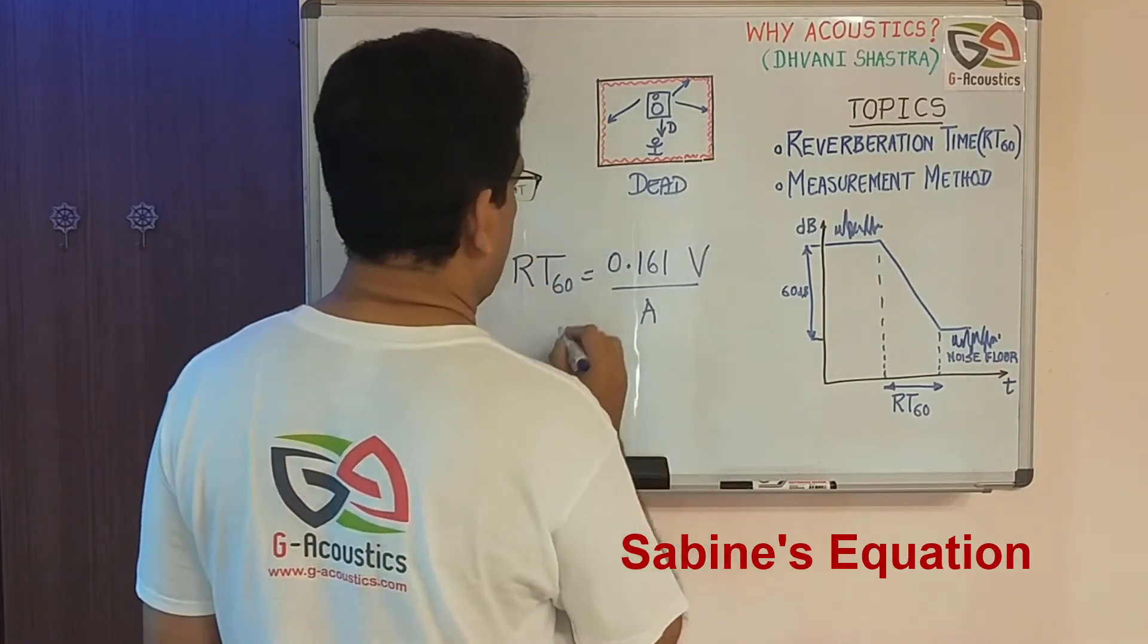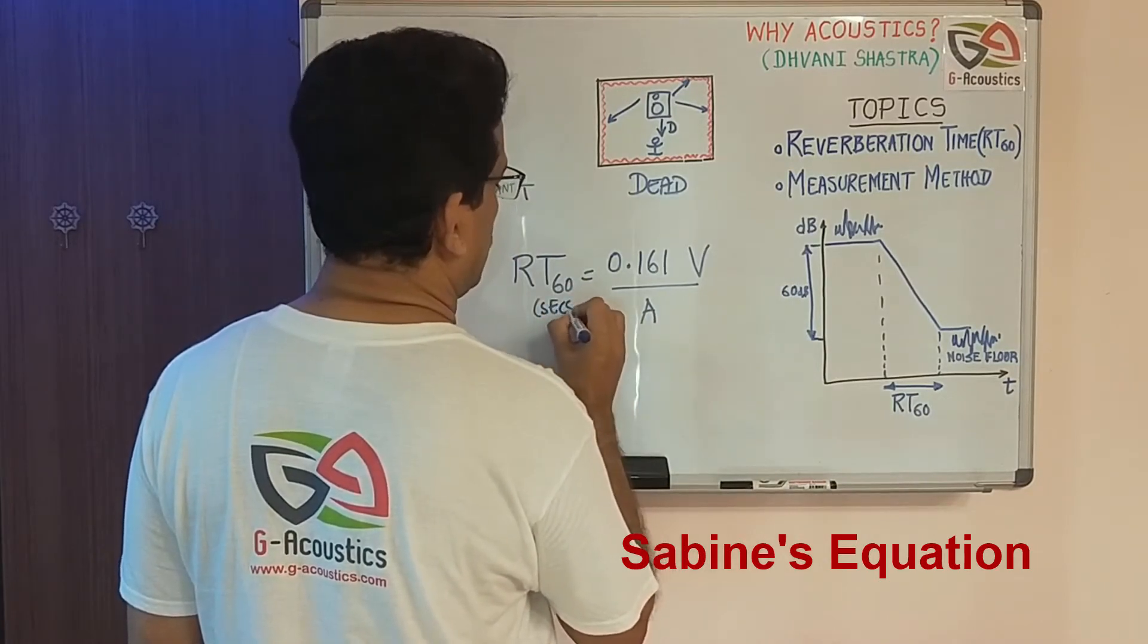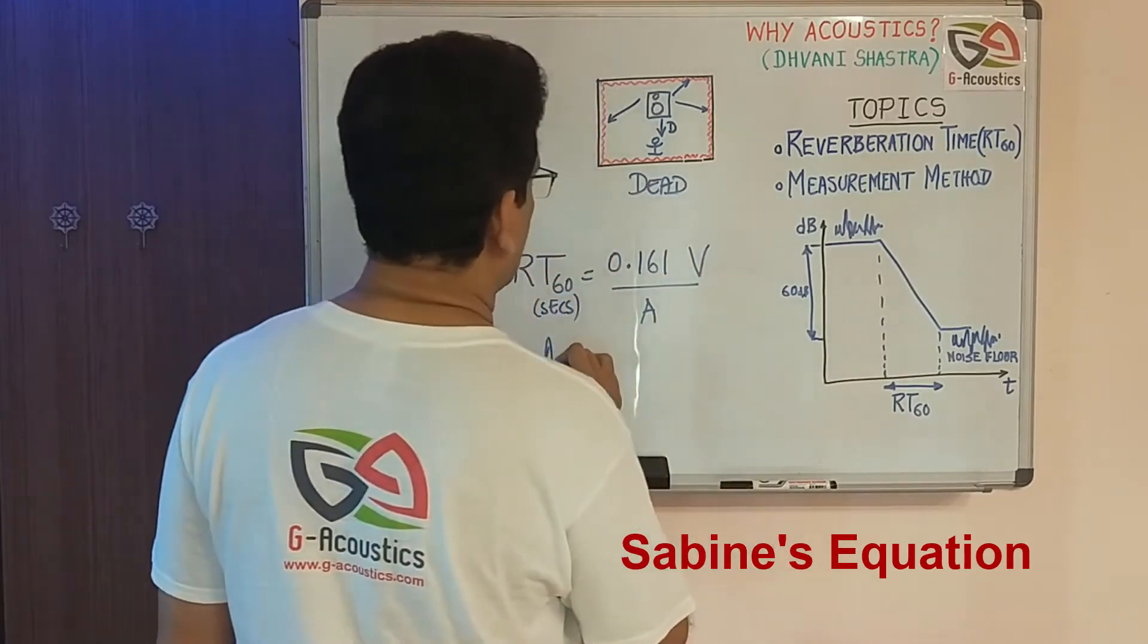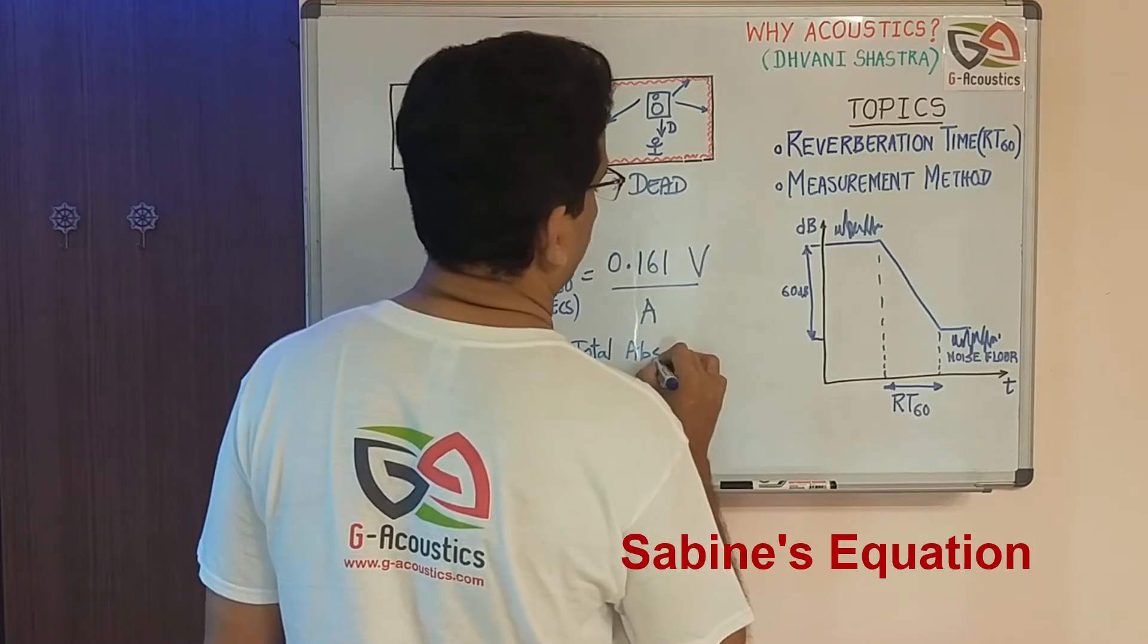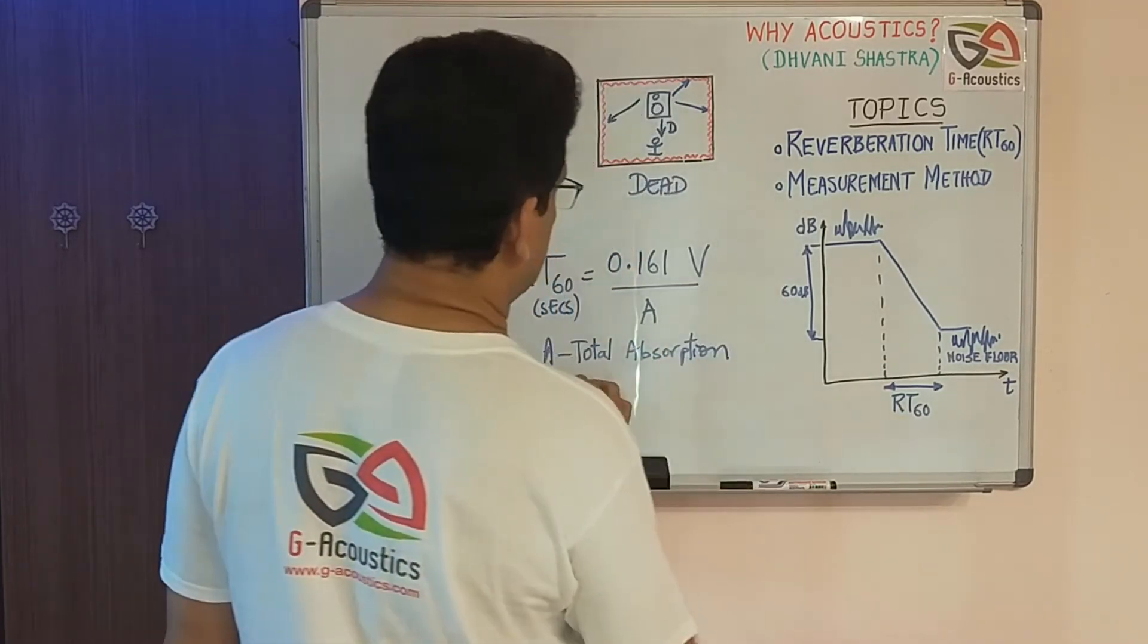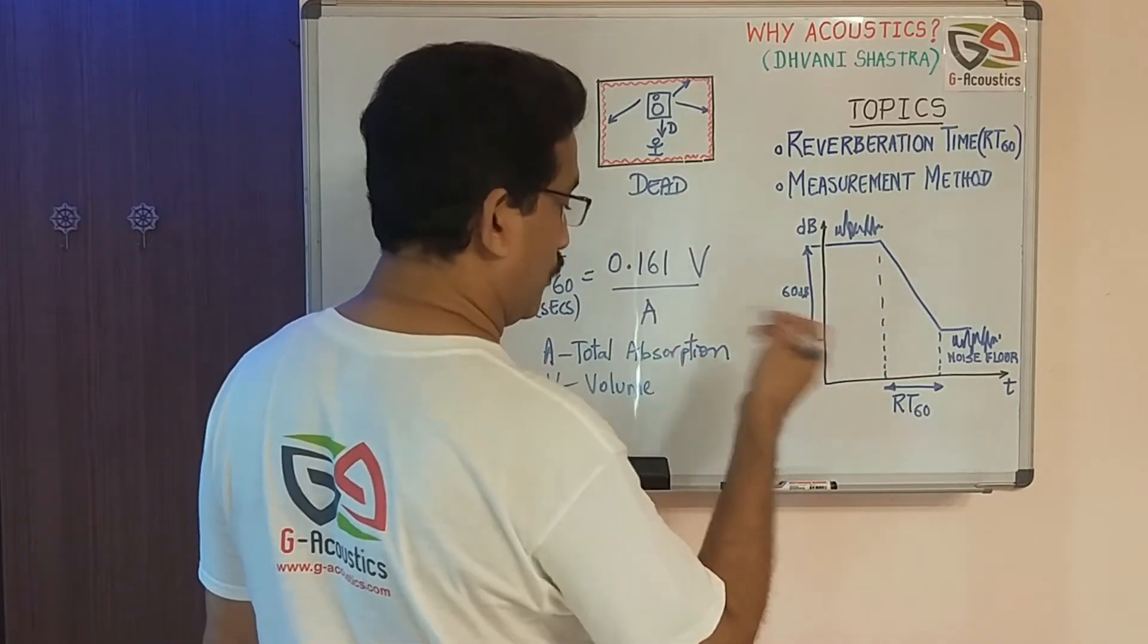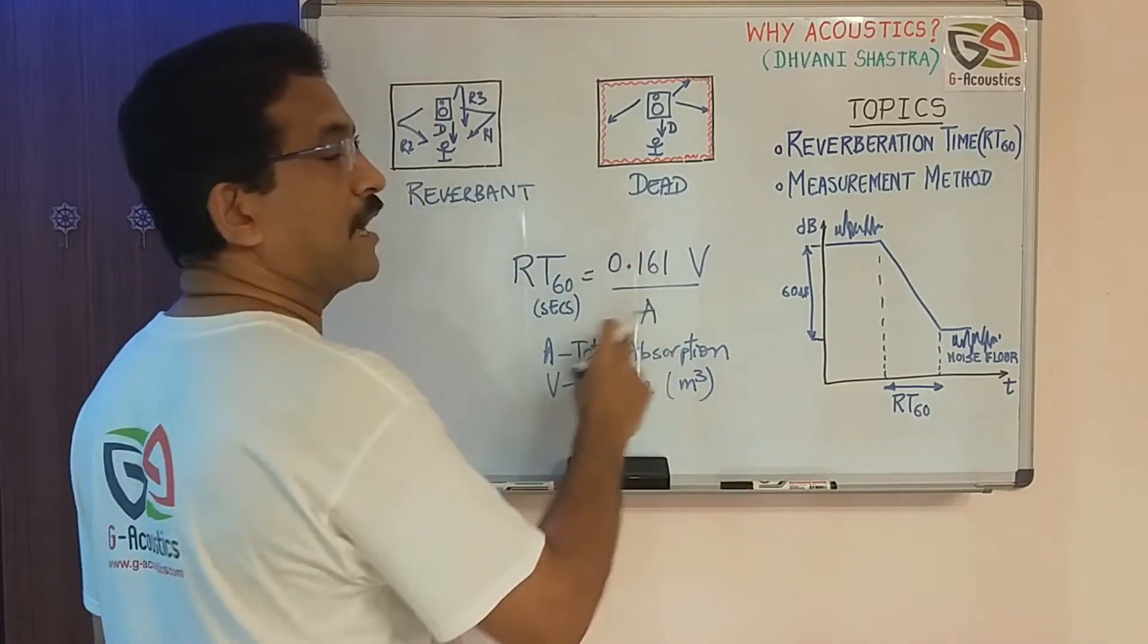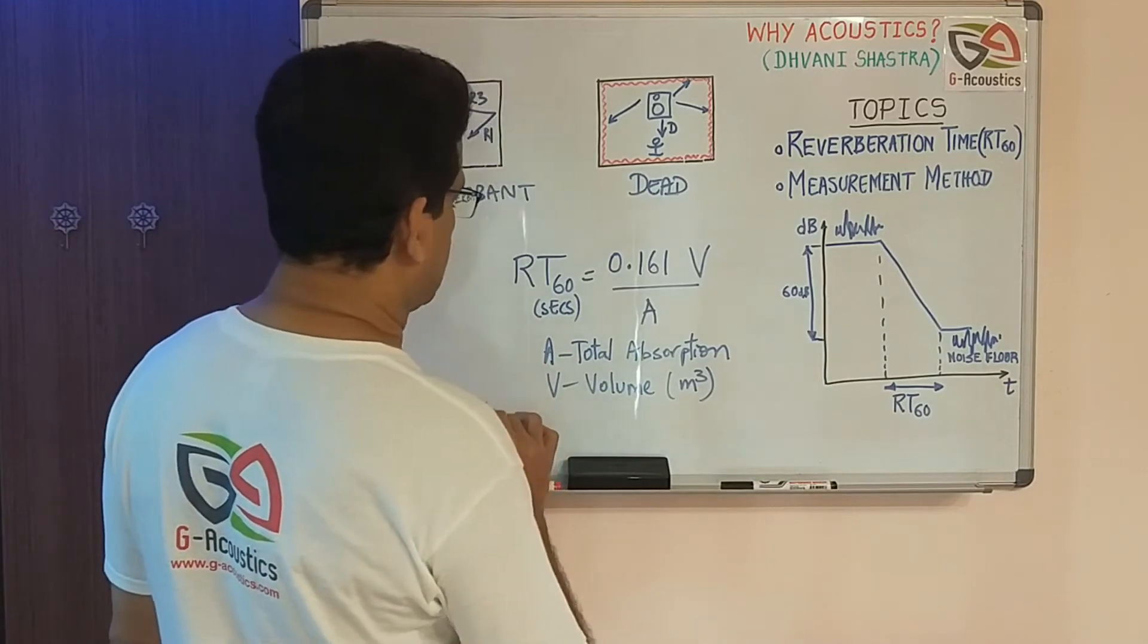RT60 is measured in seconds. A is the total absorption inside the room, and V is the volume of the room in cubic meters.